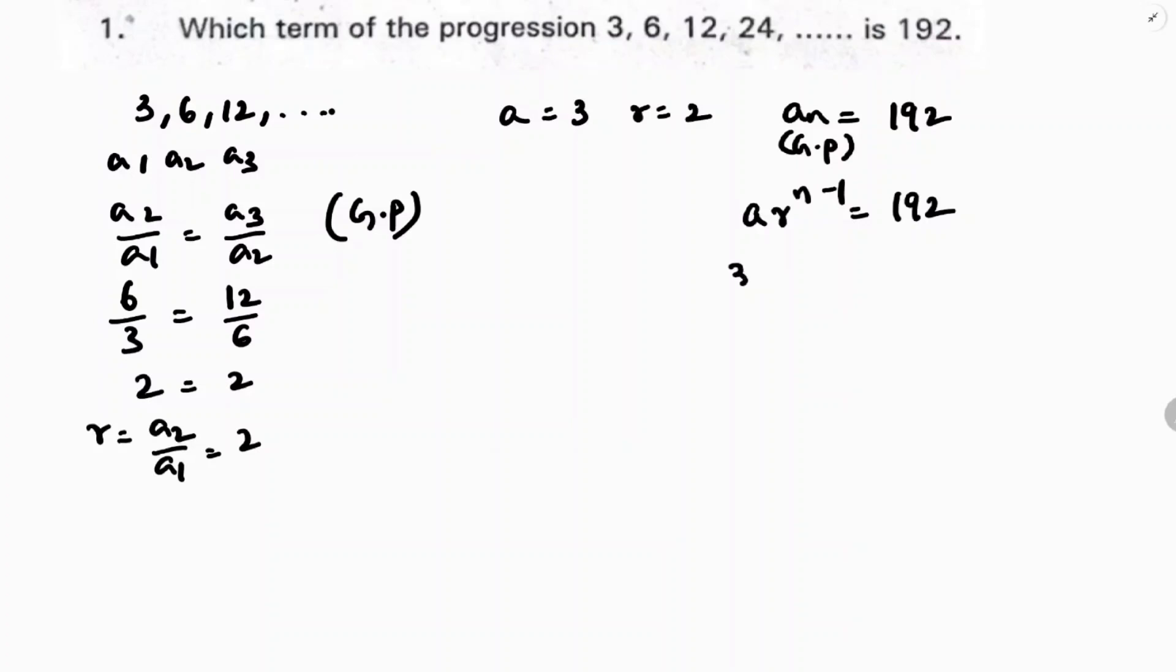The nth term of a geometric progression is a times r to the power n minus 1 equals 192. The value of a is 3, 3 into r is 2, 2 to the power n minus 1 equals 192.